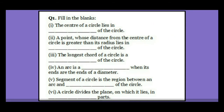So for the second one, the answer will be exterior. If your radius is greater than its distance, that point will be outside the circle, so outside means you write the word 'exterior.' The third question is: the longest chord of a circle is dash of the circle. A chord means if you join some points it is called a chord, so the biggest chord is your diameter.